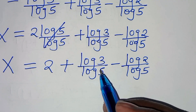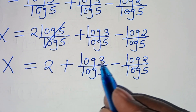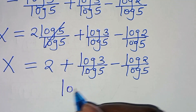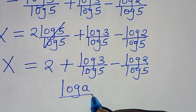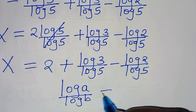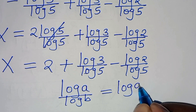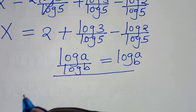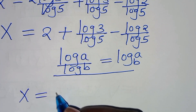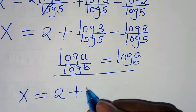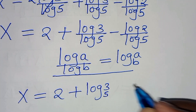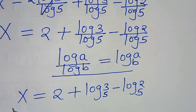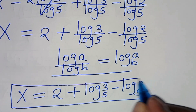From here, log3 over log5 and log2 over log5 are each in the form log(a)/log(b), which equals log base b of a. Applying this property gives us x equals 2 plus log base 5 of 3, minus log base 5 of 2. This is the value of x.